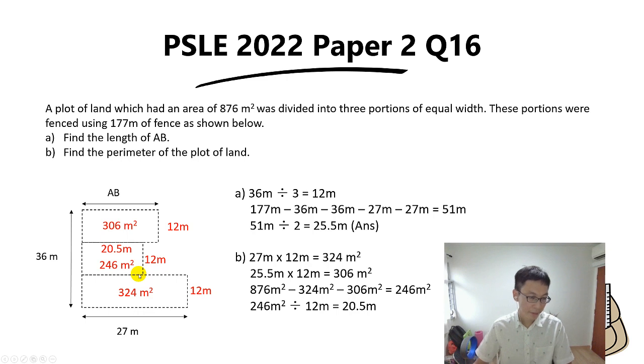So as you recall, for perimeter, what do we do? We simply take 177 minus the length inside the area, so we take 177 minus 20.5 meters times 2, because there are two times 20.5, and the answer is 136 meters.